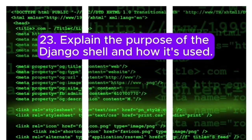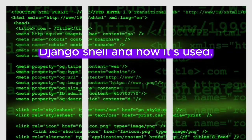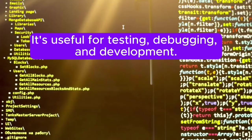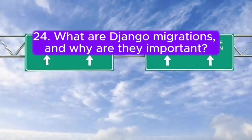Question 23: Explain the purpose of the Django shell and how it's used. Answer: The Django shell is an interactive console for executing Python code in the context of a Django project. It's useful for testing, debugging, and development.